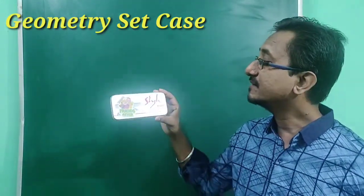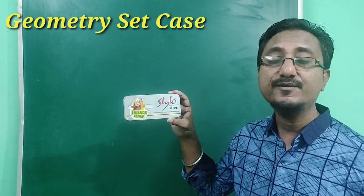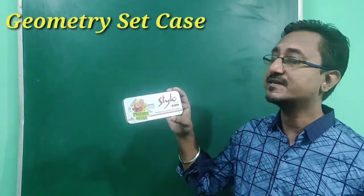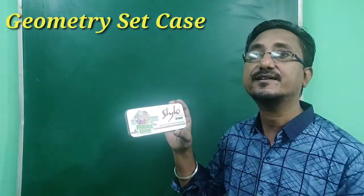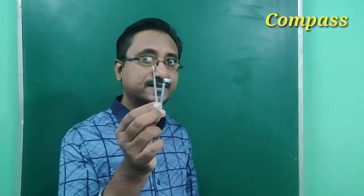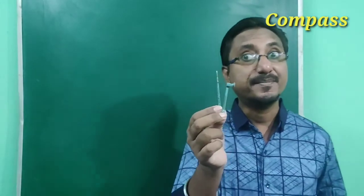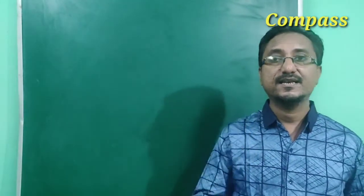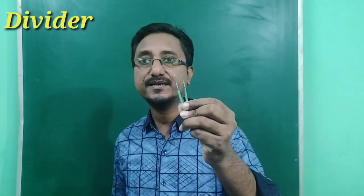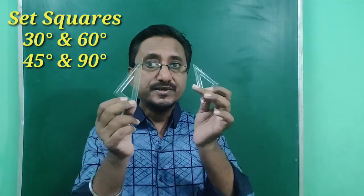For construction, we need some instruments. The main thing we need is a geometric set. The instruments inside this geometric set include a compass, or you can say a pair of compasses, and a pair of dividers, or simply a divider.